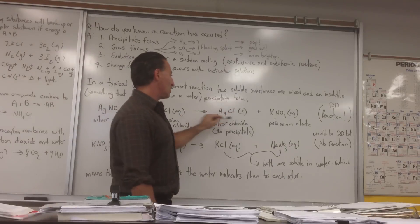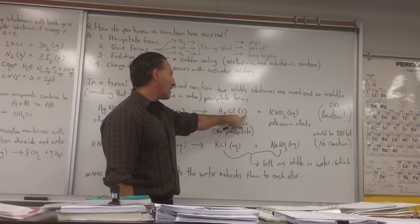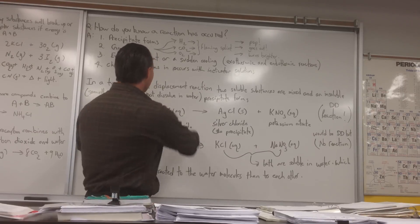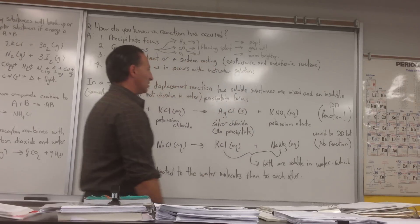And then you get potassium nitrate as well, which stays in solution. It remains aqueous. It's not insoluble. On the other hand, the AgCl is insoluble. That's why it forms a solid. That's how you can tell you've had a reaction in a double displacement reaction, because the two aqueous reagents, which are clear when you mix them, all of a sudden produce some white precipitate.